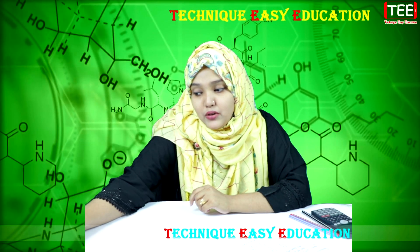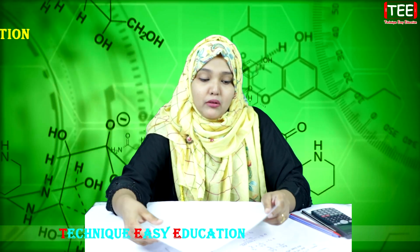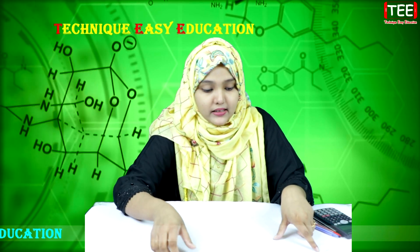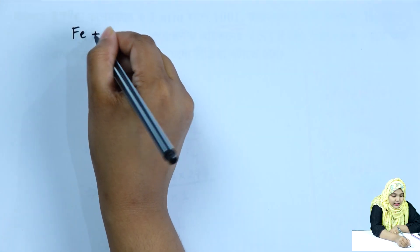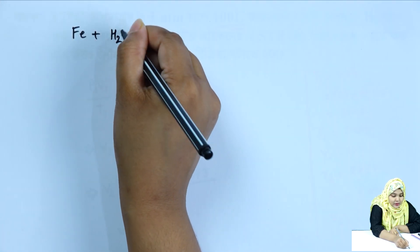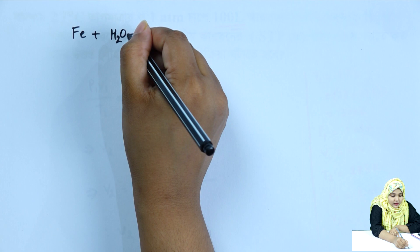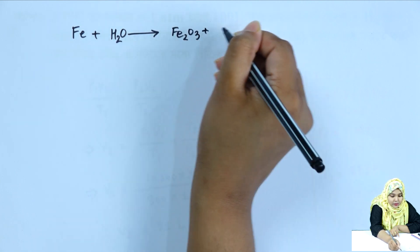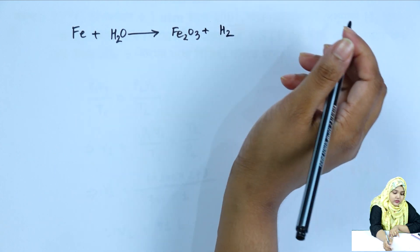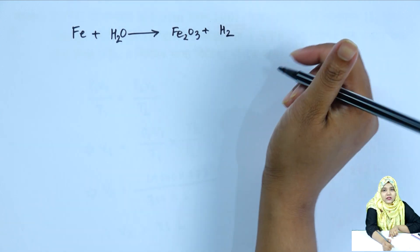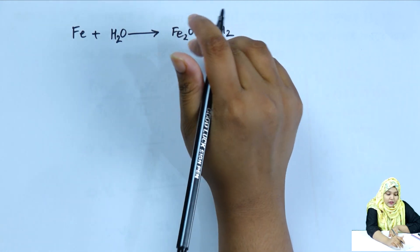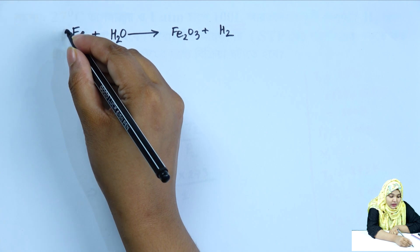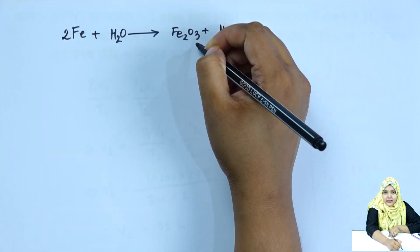In the steam system, the hydrogen gas and iron oxide: iron or steam reacts to give ferric oxide and hydrogen. Now we have to do the same thing. We have to add iron to 2. We have to add 2. We have to add oxygen to 3.